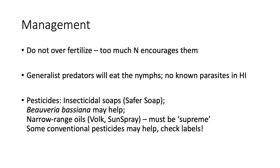In terms of management, an important cultural element is to not over-fertilize your plants. If you provide too much nitrogen, there'll be an excess of free nitrogen in the plant, which actually encourages sap-sucking insects. They really like to feed on plants with a large amount of free nitrogen because that provides the base material for amino acids and proteins. So avoid over-fertilizing — that can help substantially. There are also generalist predators like predatory mites and some thrips that will eat the nymphs of lace bugs, and parasitic wasps that attack them in their place of origin in the Caribbean and Southeast USA.